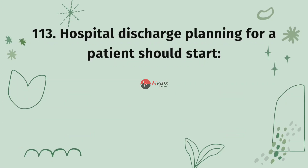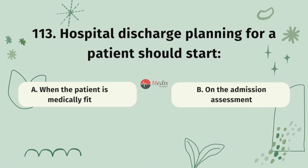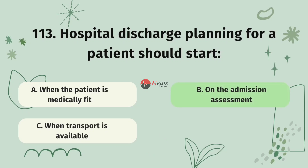Question 113. Hospital discharge planning for a patient should start: Option A, when the patient is medically fit. Option B, on the admission assessment. Option C, when transport is available. The correct answer is B.